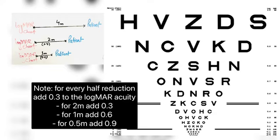For every half reduction of viewing distance, 0.3 LogMAR value is added. Like for 2m, add 0.3, for 1m, add 0.6, and for 0.5m, add 0.9 LogMAR.